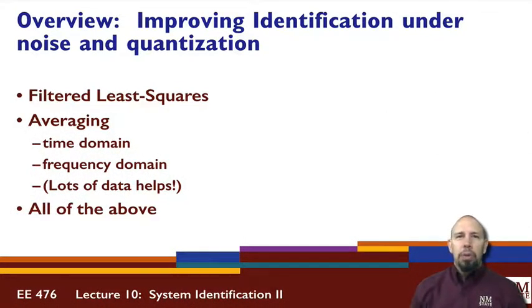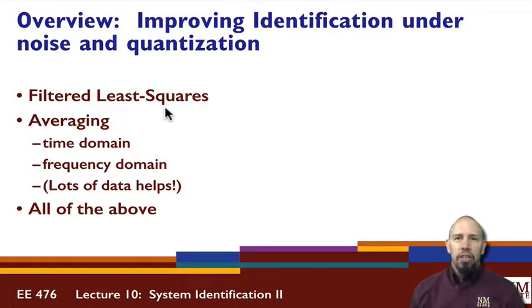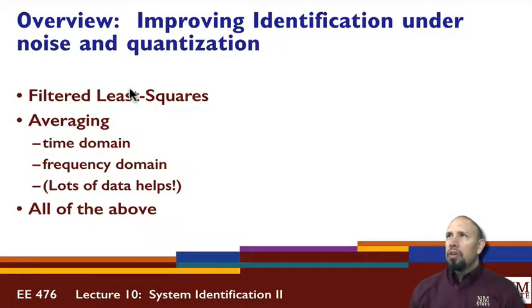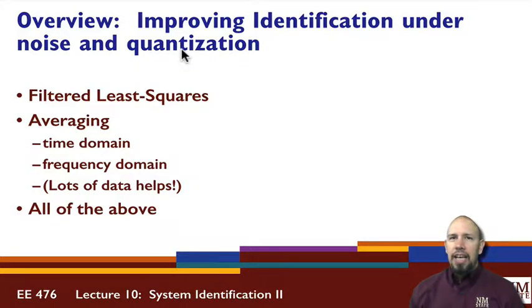Here are some approaches we're going to talk about. First, we'll talk about Filtered Least Squares — what it is and how we do it. Next, I'm going to talk about Averaging, which is another way of dealing with some of these things, under Noise and Quantization. This is still assuming your system is acting in a linear way; it just has noise associated with it.